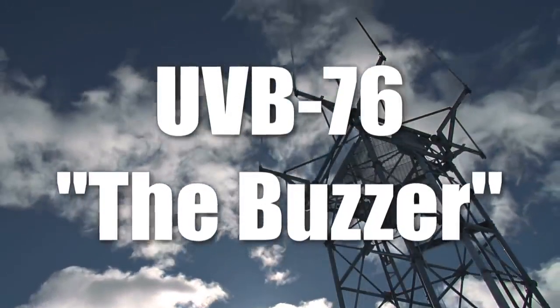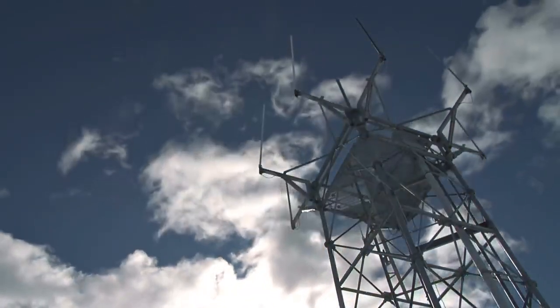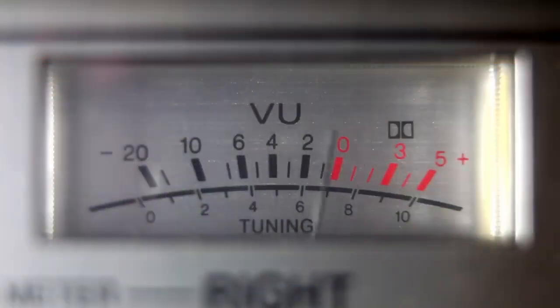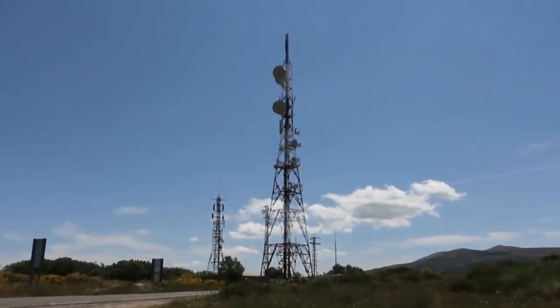Most assume a numbers station is a category of shortwave radio stations characterized by broadcasts of formatted numbers addressed to intelligence officers operating in foreign countries. Most identified stations use speech synthesis to vocalize numbers, although the digital modes such as phase shift keying and frequency shift keying, as well as Morse code transmissions are also used. UVB-76, also known as the buzzer, is the nickname given by radio listeners to a shortwave radio station that broadcasts on the frequency of 4625 kHz. It broadcasts a short, monotonous buzz tone repeating at a rate of approximately 25 tones per minute, 24 hours a day.